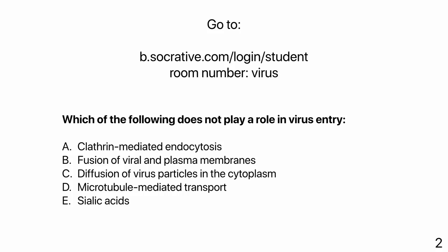That conformational change in the viral glycoprotein takes place at the plasma membrane at neutral pH, triggered by two-receptor interaction. Our next question: which of the following does not play a role in virus entry? Clathrin-mediated endocytosis, fusion of viral and cell membranes, diffusion of virus particles in the cytoplasm, microtubule-mediated transport, sialic acids. The answer is C — diffusion does not play a role; it's always motor-driven, microtubule motor-driven. Clathrin-mediated endocytosis is involved, microtubule-mediated transport is involved, and sialic acids are involved in attachment of some viruses.